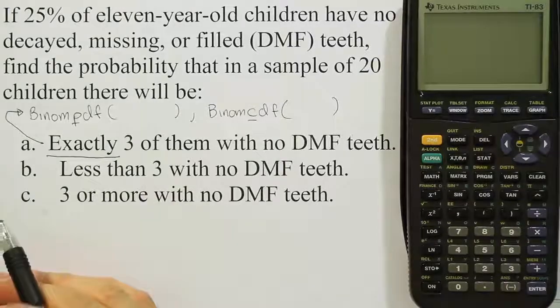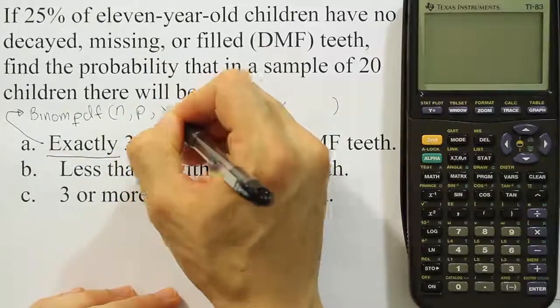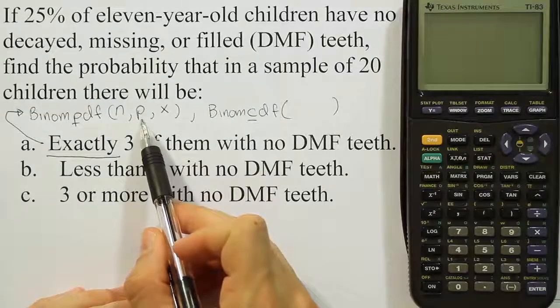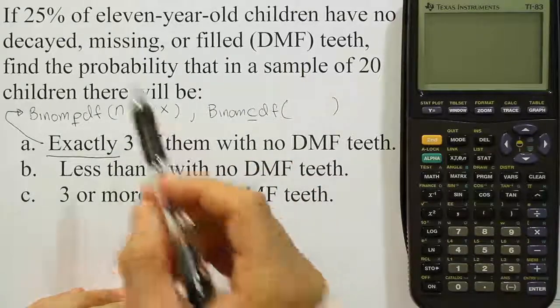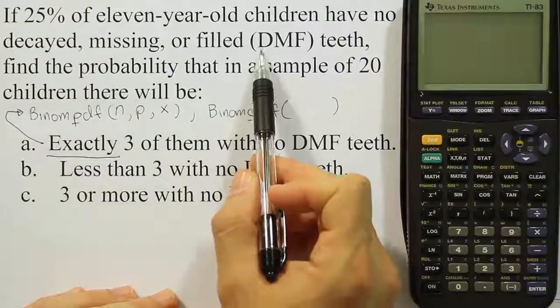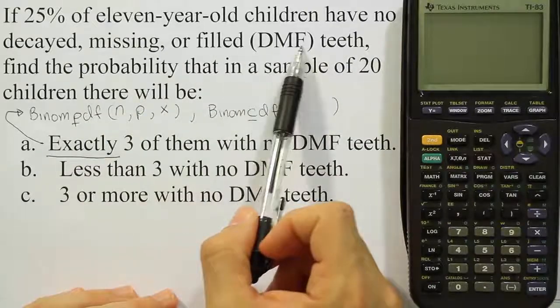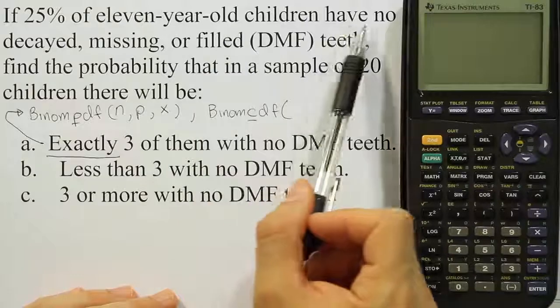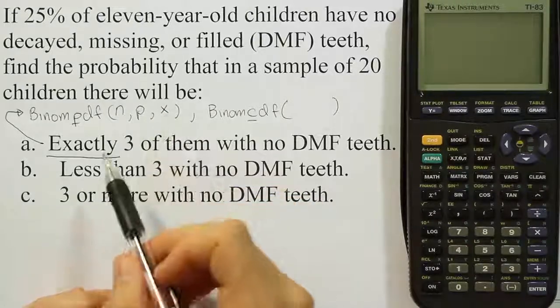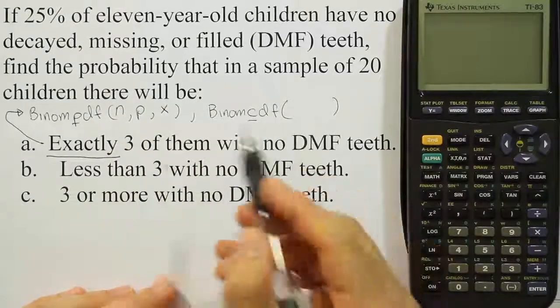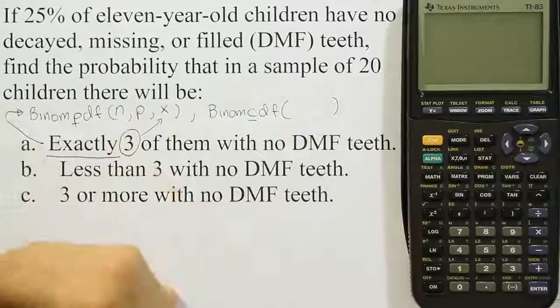Now let's look at how to do this in the calculator. The structure the calculator wants is n, p, and then x. Now p must be given as a fraction or a decimal, and of course n and x are whole numbers. So n is our total sample, which is 20. Our p is given to us, there's a 25% chance that people will have no DMF teeth. So 25% of the 11-year-old population has no DMF teeth. So p would be 25%, and the x will be the specific value we're looking for. In this case, three of them with no DMF teeth. So three is our x, 20 is our n, and our p is 25%.